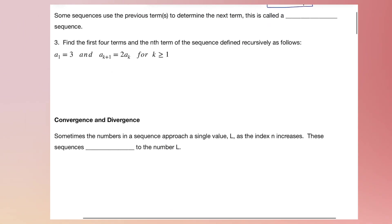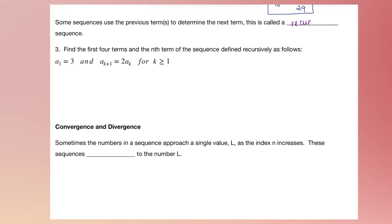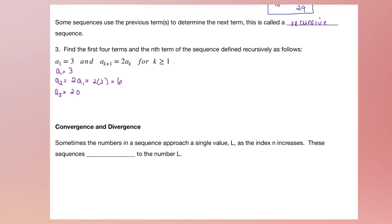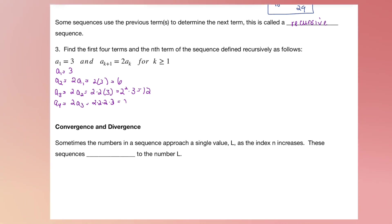Some sequences use the previous term to determine the next term — this is called a recursive sequence. Find the first four terms of this sequence. A sub 1 is 3. A sub 2: the pattern says take the previous answer and multiply by 2, so 2 times 3 equals 6. A sub 3 is 2 times A sub 2, so 2 times 6 — or 2 squared times 3 — which is 12. A sub 4 is 2 times A sub 3, so 2 times 2 times 2 times 3, or 2 cubed times 3, which equals 24.